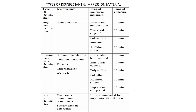We are currently using the disinfectant spray solutions. Coming to types of disinfectants and impression materials: high level disinfectant is glutaraldehyde, used for irreversible hydrocolloid and zinc oxide eugenol. For alginate, polysulfide, polyether, and addition silicone — the most commonly used impression materials — the exposure time is 10 minutes.